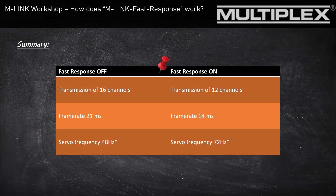To summarize Fast Response: I advise you to always turn Fast Response on if 12 channels are enough for you. With Fast Response activated, you have a lower frame rate of just 14 milliseconds and a higher servo frequency of 72 Hz. In my opinion, all servos of the last 10 years can handle 72 Hz, but if you are not sure, you can look it up in the manufacturer's documentation. As an example, with Hitec servos we use servo frequencies from 120 to 33 Hz.